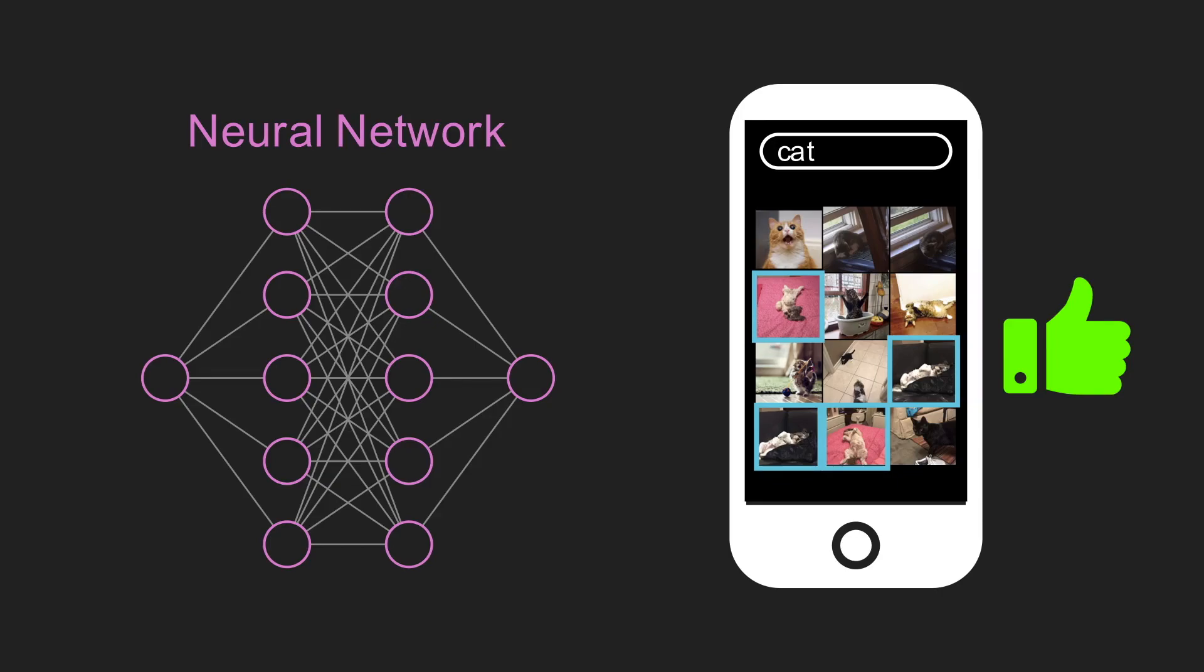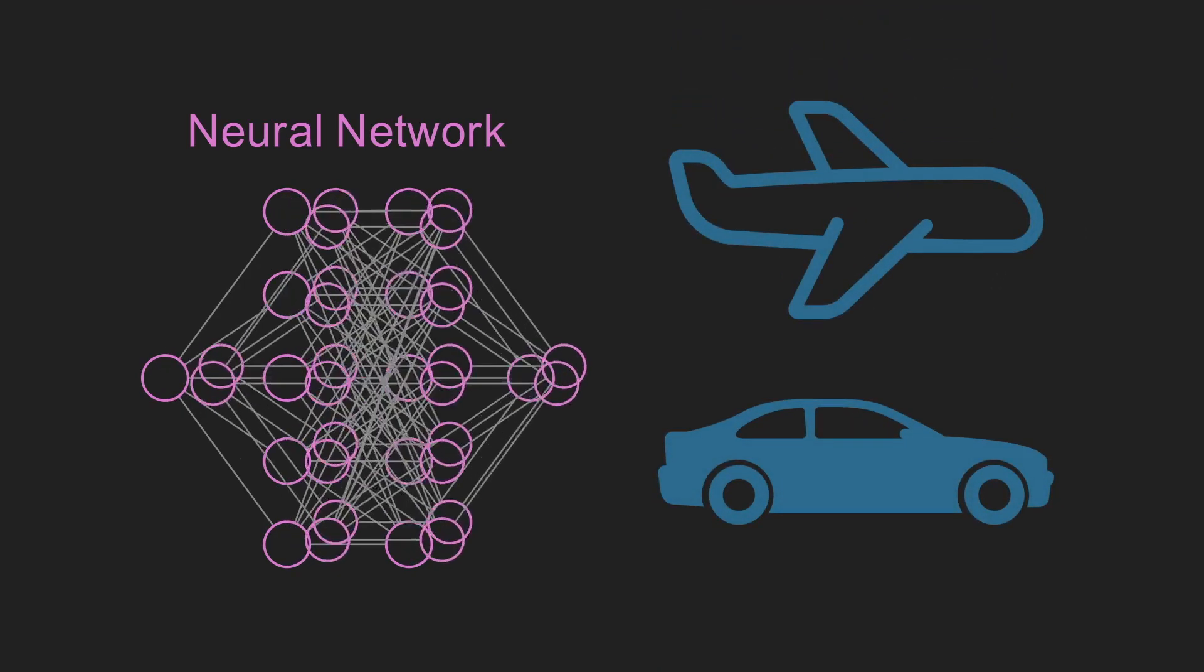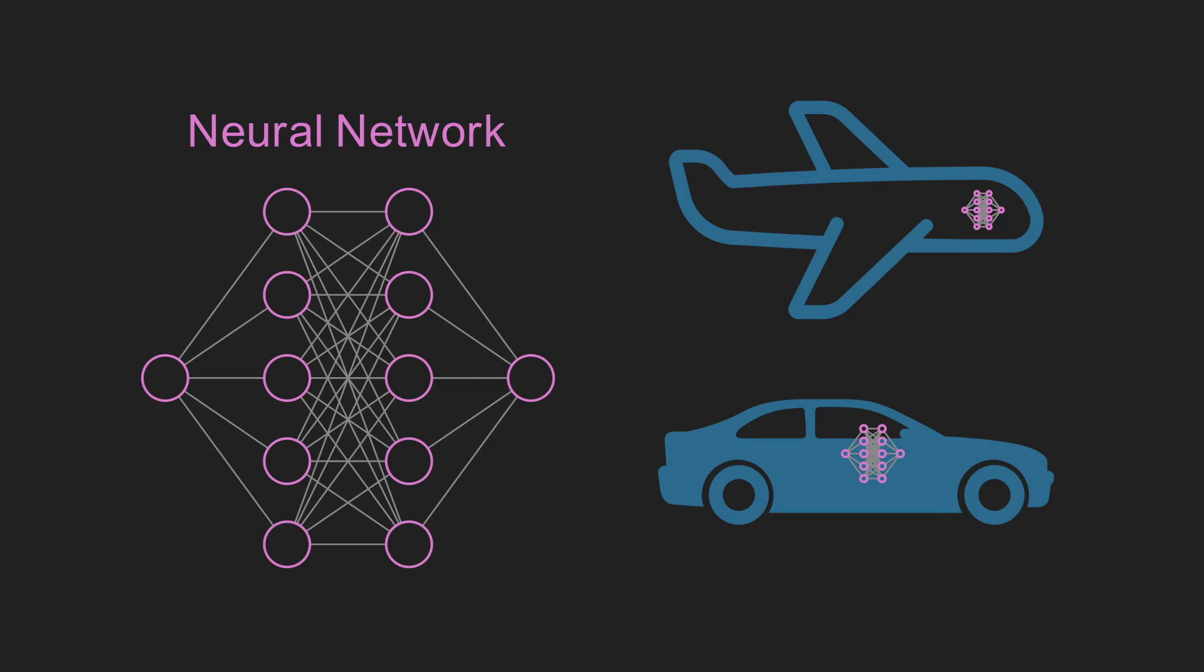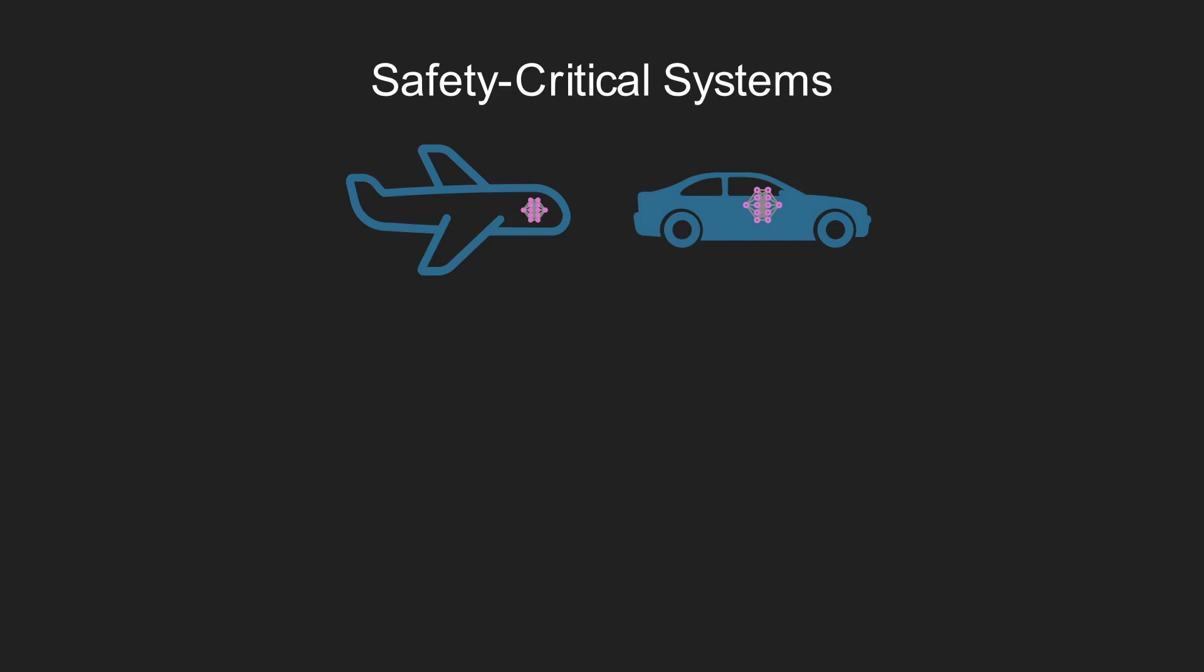But there are some contexts where failure is not okay. For example, what if the neural network was being used to control a plane or a car? These are what we call safety-critical systems, and in these cases, a failure could be quite catastrophic.